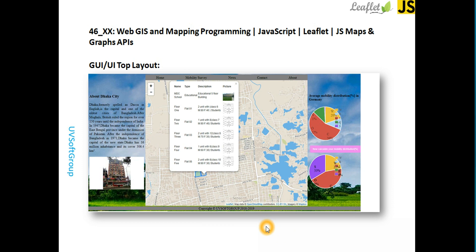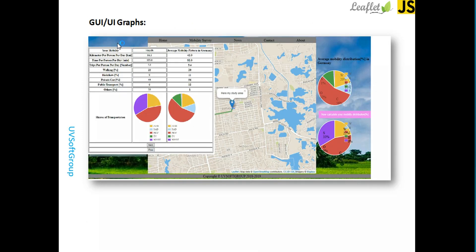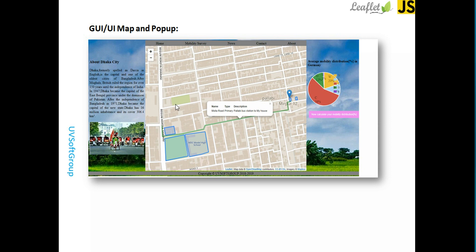You can see the graph layers and graphical information — you plot the survey information here. There is also calculation involved, and you can paint the maps and so forth. This is one of the other maps with pop-ups that I want to talk about.